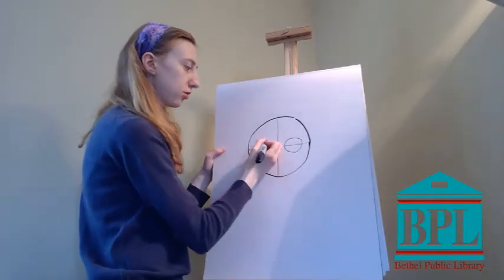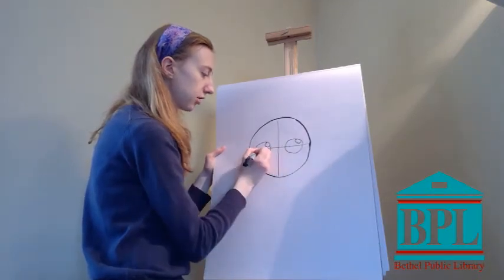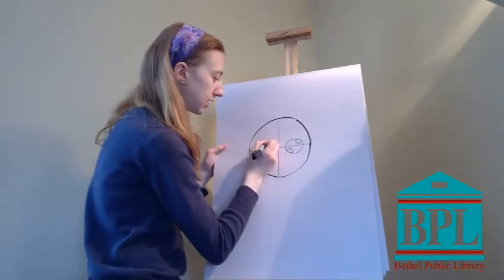So I'm going to fill in my eyes. I'm going to give them a little circle up here, a little circle up there. So they're kind of twinkling and I'm going to fill in my eyes with some black.